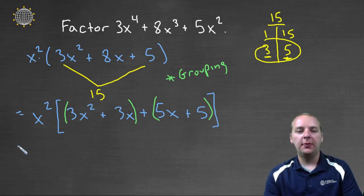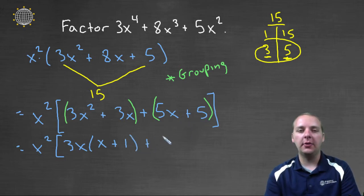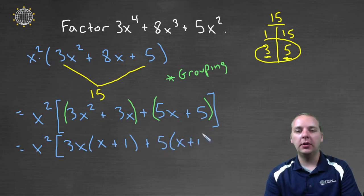So the first term, I still have our x squared. The first term has a common factor of 3x. So if you pull the 3x out, you'll get a leftover x plus 1. And in the second group here, 5x plus 5, you can pull out a common factor of 5, and you'll be left with an x plus 1 also.